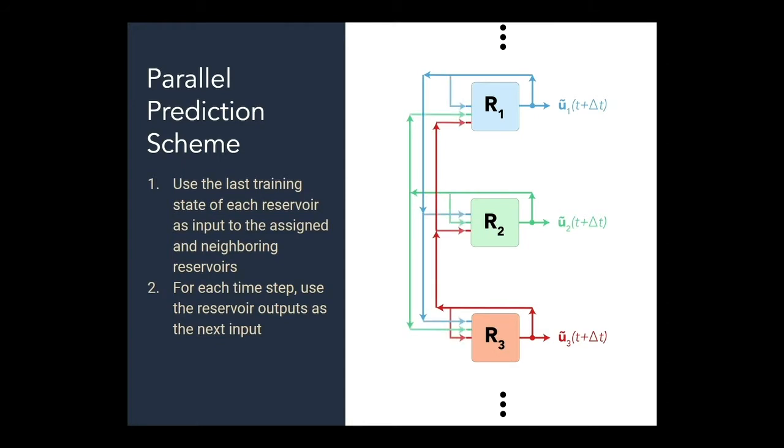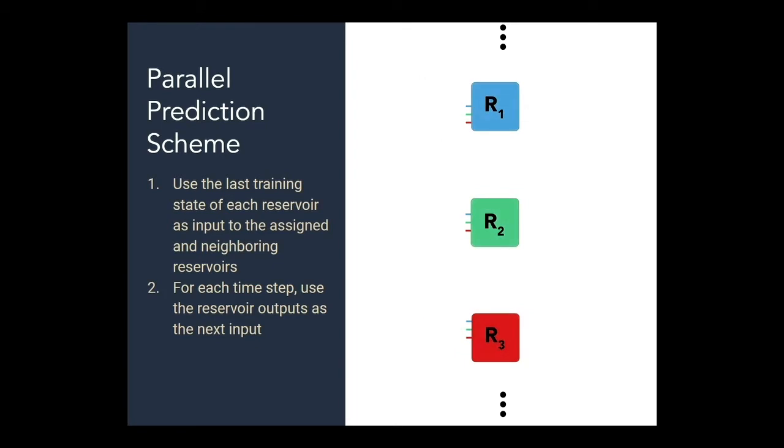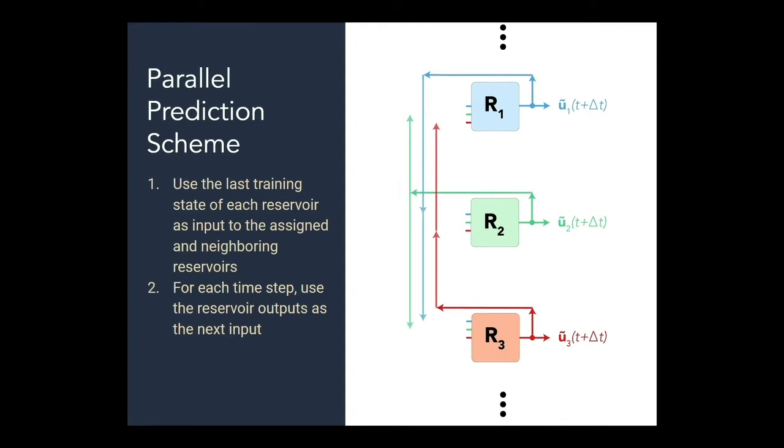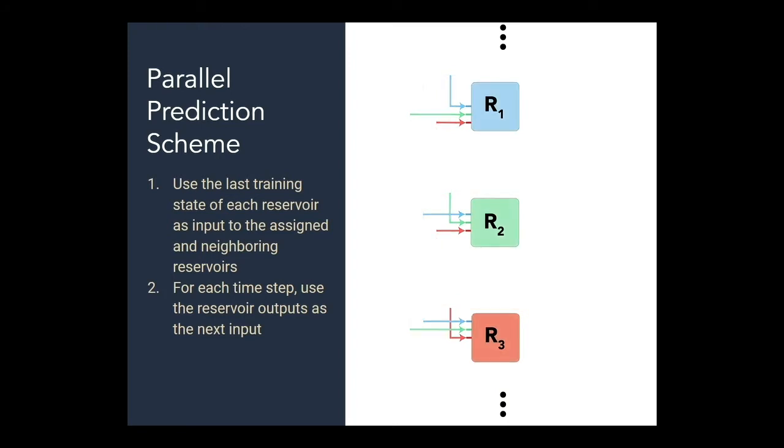For the parallel prediction scheme, it works very similar to the regular prediction scheme in that you feed the assigned node's data back into the assigned reservoir. The difference however in the parallel scheme is you also reinsert this data from each reservoir into its neighboring reservoirs. You can see that in the animation above.